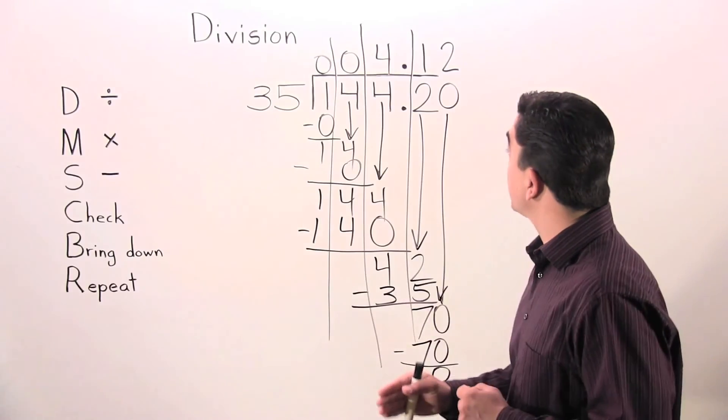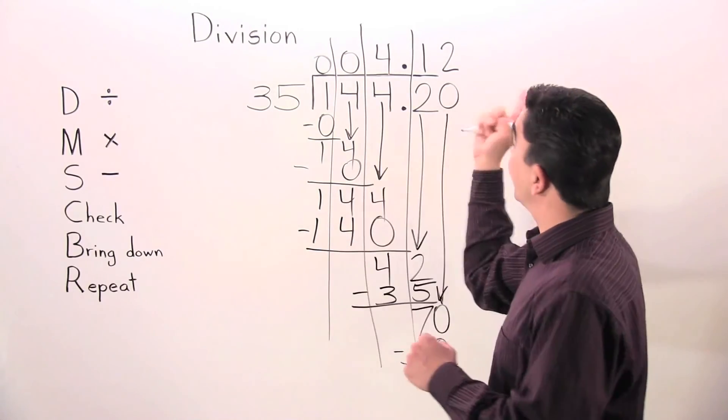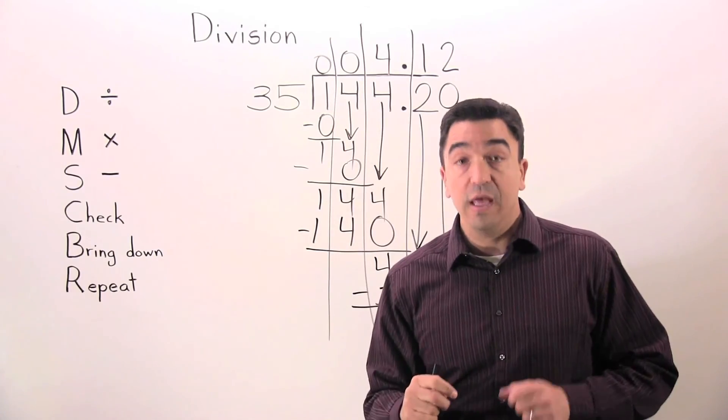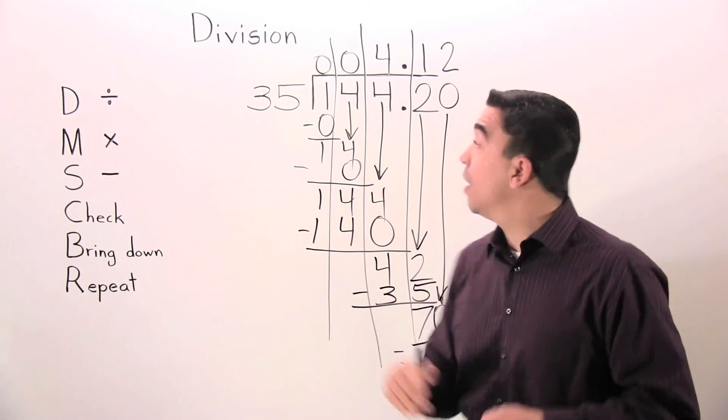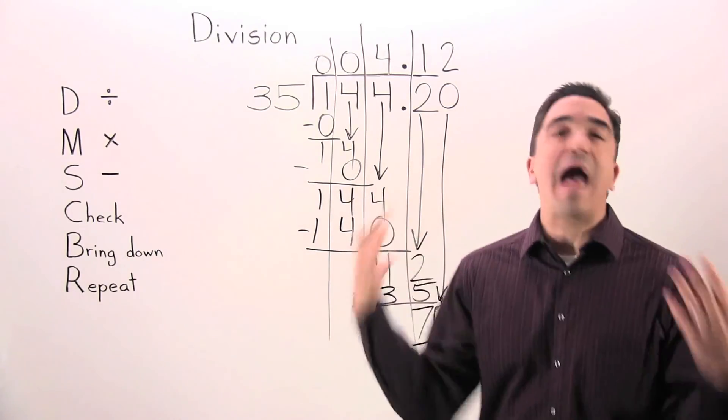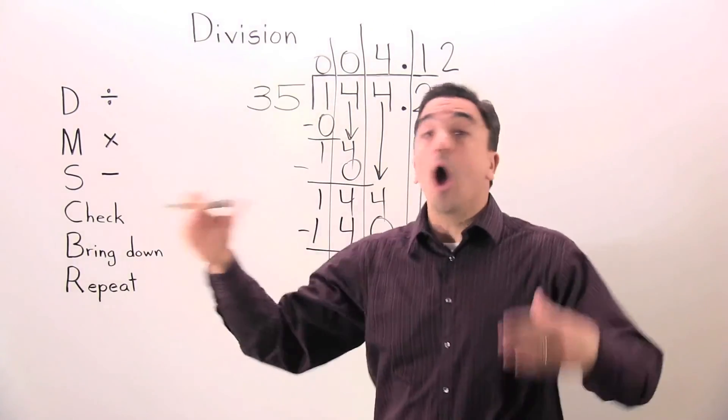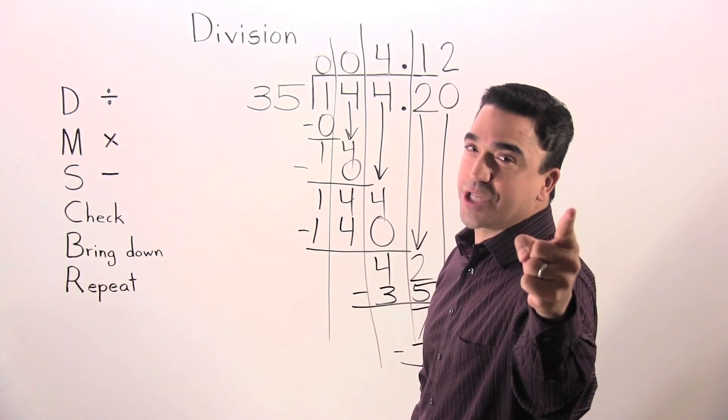Therefore, 144.2 divided by 35 gives us a quotient of 4.12, or 4 and 12 hundredths. That concludes our lesson on division. Coach Mike at My Growing Brain. Challenge Yourself.